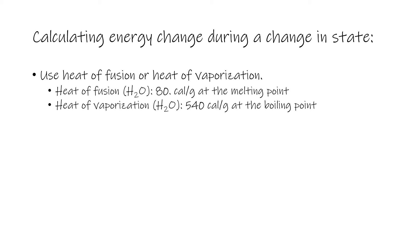For water, the heat of fusion is 80 calories per gram and this occurs at the melting point. That means it requires 80 calories of energy to melt one gram of ice at 0°C, or 80 calories are released for every gram of water that freezes. The heat of fusion is used for energy changes between liquids and solids in either direction. The heat of vaporization calculates the energy required or released when steam condenses or water vaporizes — between liquid and gas in either direction — and for water that is 540 calories per gram.